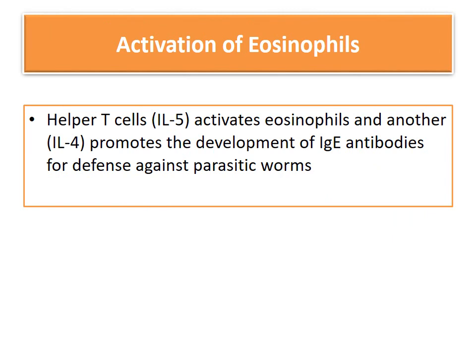Helper T cells also have additional functions: they secrete interleukin 4 and 5 which, besides activating B cells for humoral immunity, also activate eosinophils and promote the development of IgE antibodies for defense against parasitic worms.